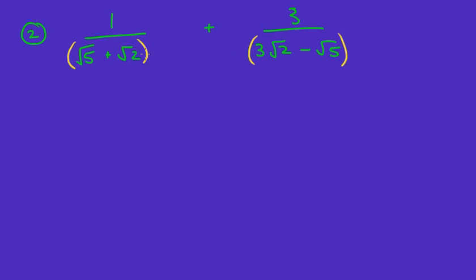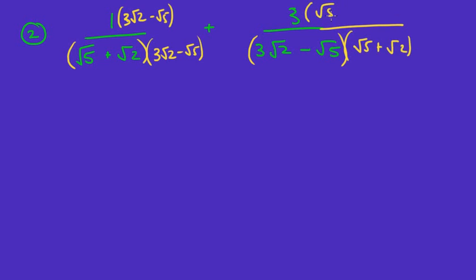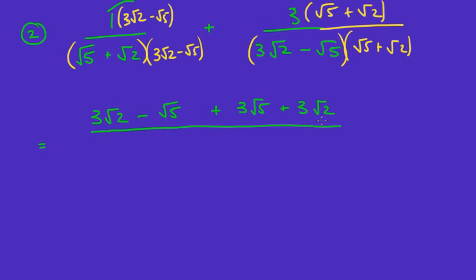I'm going to put brackets around them. Remember the half plus the third? In order to get a common denominator, we're going to times these two things together. So I'm going to times this by three root two minus root five, and times the top by three root two minus root five. Likewise, this side I'm going to times by root five plus root two, and times the top by root five plus root two — exactly like we did the last question. Now the next step, we're going to expand the brackets. One times three root two is just three root two. One times negative root five is just negative root five. Plus three times root five is three root five, and three times root two is three root two. So it's all over the common denominator.